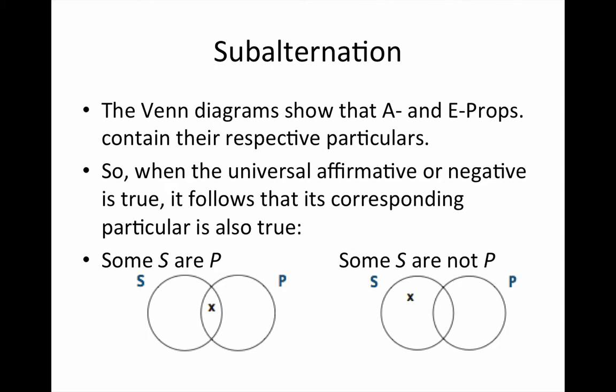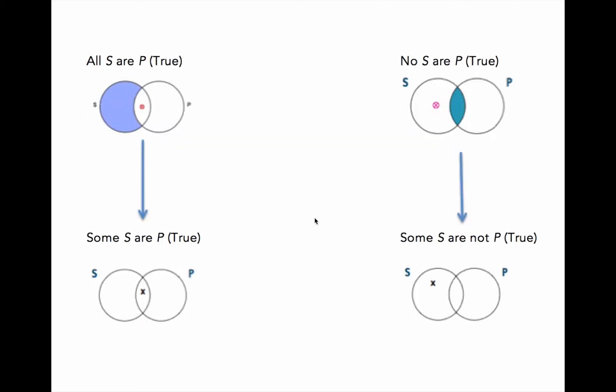When you compare the Venn diagrams for the universal affirmative and universal negative with those for the particular affirmative and particular negative, you can see that the universal entails or already diagrams its corresponding particular. So when the universal affirmative is true, the corresponding particular is true. The same goes for the universal negative. Let's take a look at the relevant parts of the square of opposition.